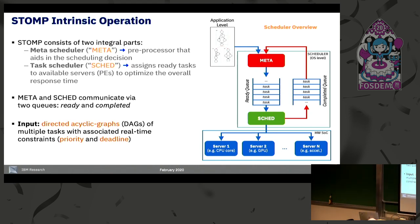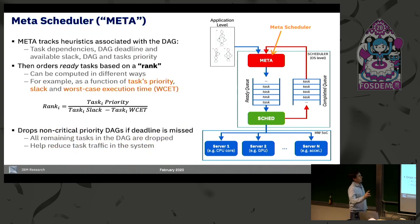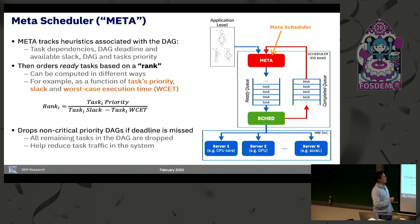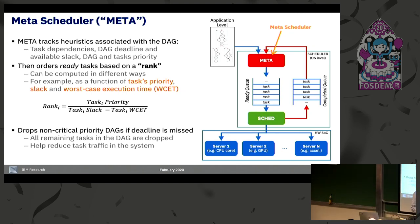The input of STOMP comes in the form of directed acyclic graphs, or DAGs, where a DAG may represent an application or a new radio flow graph, and the nodes are the tasks or blocks to execute. Meta does some preprocessing, including computing the rank associated with each task. Rank is a metric that tells us how fast we should execute that task — high rank means it must execute very fast, possibly meeting a real-time constraint, while lower rank means we have more slack. Tasks are ordered in the ready queue by rank.